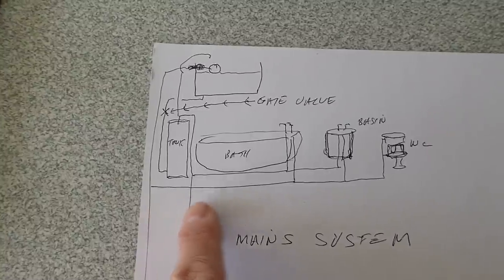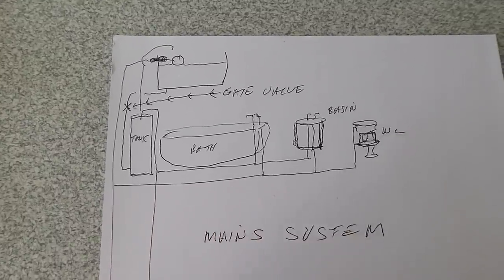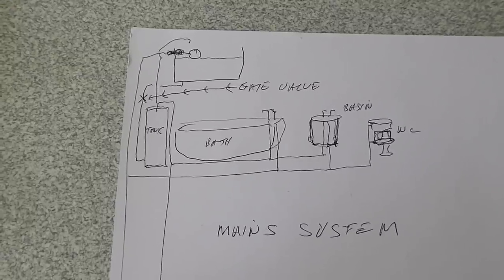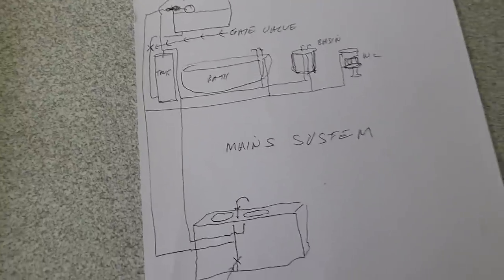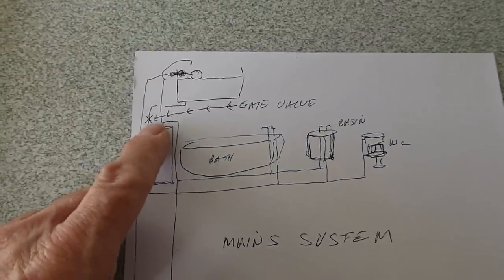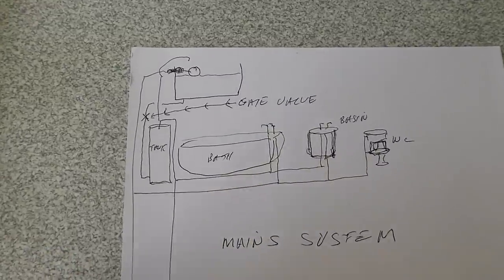And what also it does, it tees off and it will feed any other appliances upstairs like the basin, WC, shower if you have one. It'll all be on the mains, so it's fairly simple, shut that off and everything goes off and you can even drain the roof tank if you wanted to, to do a hot tap or anything.